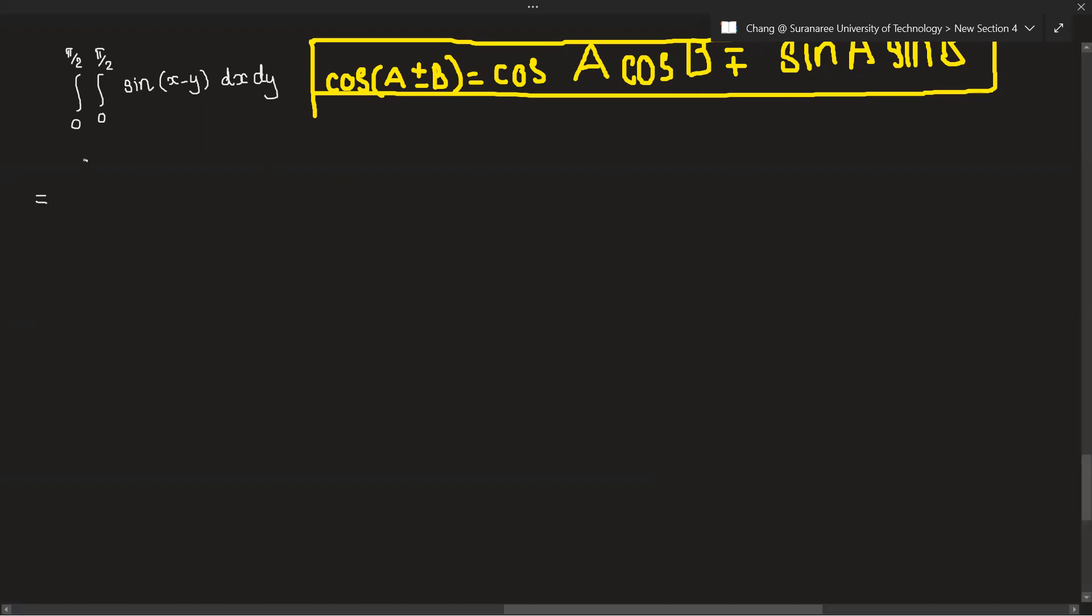So first we have to integrate with respect to x from 0 to pi over 2. All right, so when we integrate sine, we get minus cos. When we integrate sine we get minus cos of x minus y.